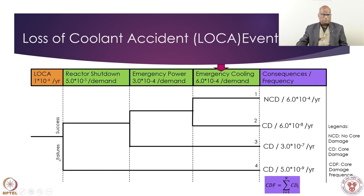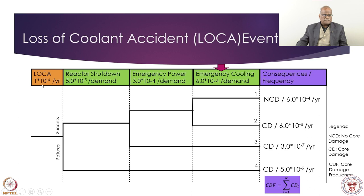We have the safety system to shut down the reactor — the top path is success, going down is failure. If the protection or shutdown system gets activated, we travel the success path. If emergency power gets activated, that is the second success. Third success is when the emergency cooling system activates and starts in response to LOCA — resulting in No Core Damage (NCD). If the reactor shutdown system itself does not activate — despite its redundancy and diversity — the frequency contribution to core damage is 5×10⁻⁹.